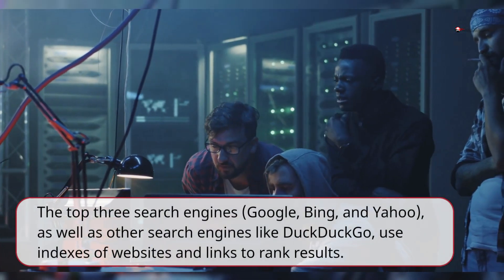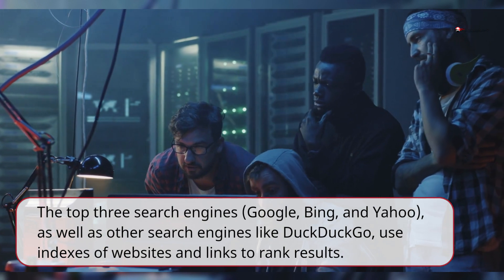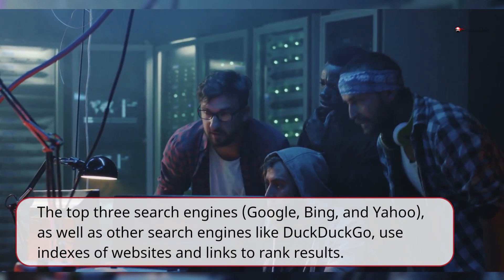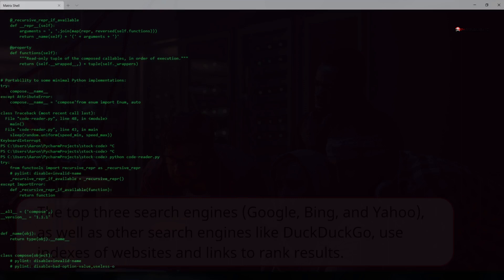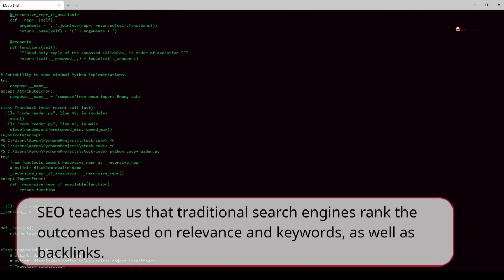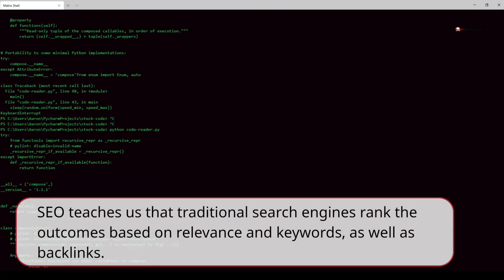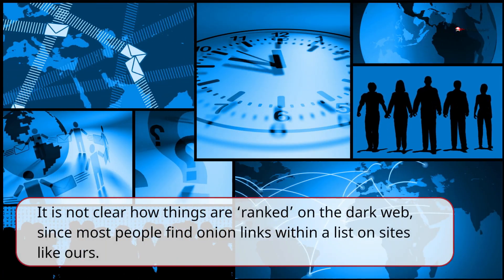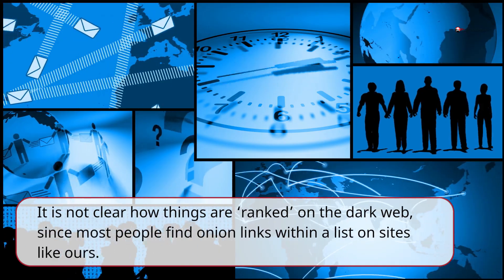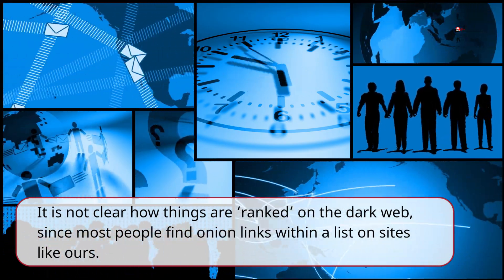The top three search engines — Google, Bing, and Yahoo — as well as other search engines like DuckDuckGo, use indexes of websites and links to rank results. SEO teaches us that traditional search engines rank outcomes based on relevance and keywords, as well as backlinks. It is not clear how things are ranked on the dark web, since most people find onion links within a list on sites like ours.